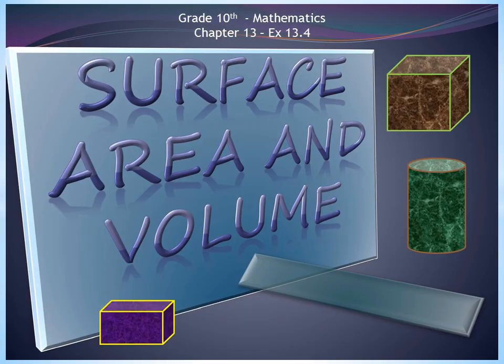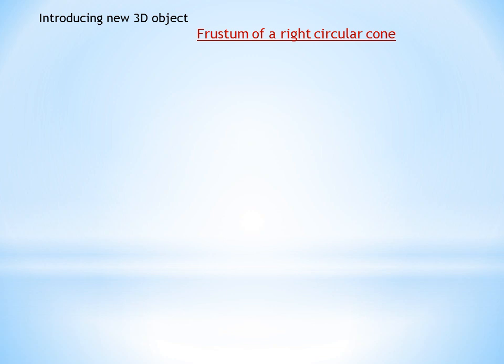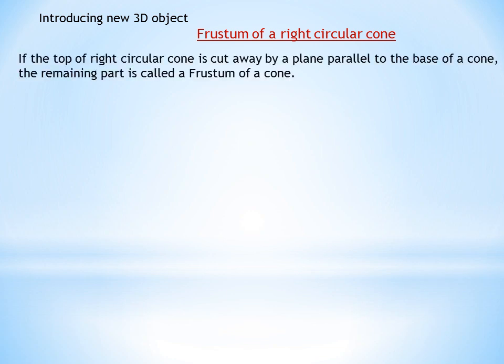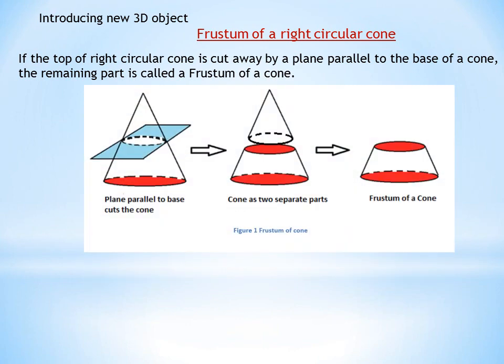Hello everyone. Let us continue with our chapter on surface area and volume. Here we are introducing a new 3D object: the frustum of a right circular cone. What happens when a cone is cut by a plane parallel to its base? When we cut the cone into two parts with a plane parallel to the base and remove the upper part, we get a new 3D shape known as the frustum of a cone.